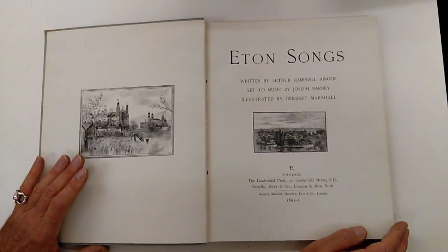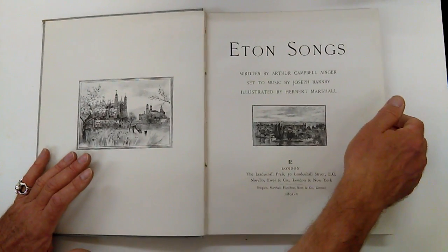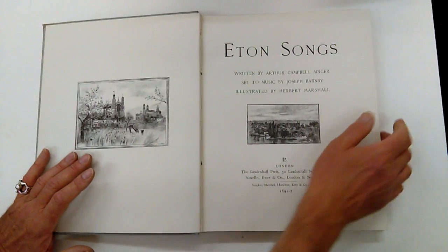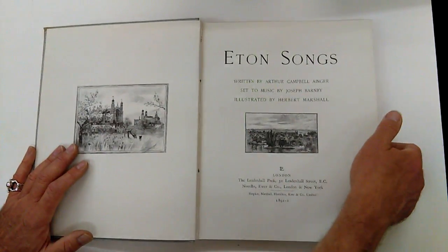Right, ladies and gentlemen, a large deluxe 1891-92 book published by the Leadenhall Press of Eton songs written by A.C. Ainge, Arthur Campbell Ainge, a great Eton figure, set to music by Joseph Barnaby.